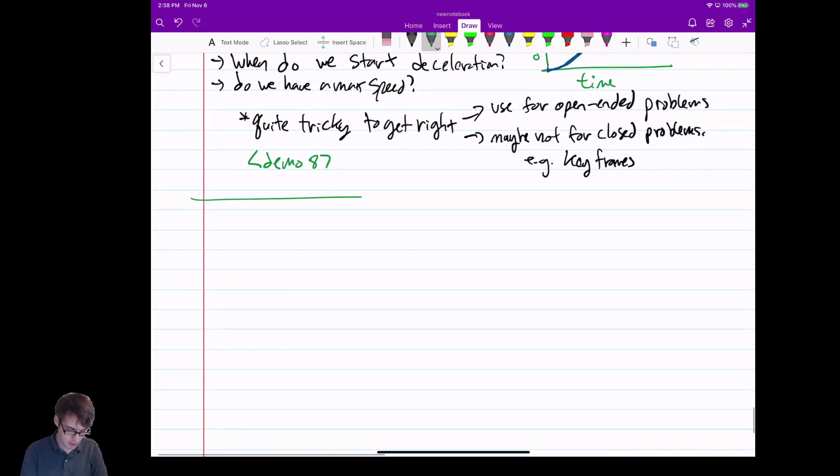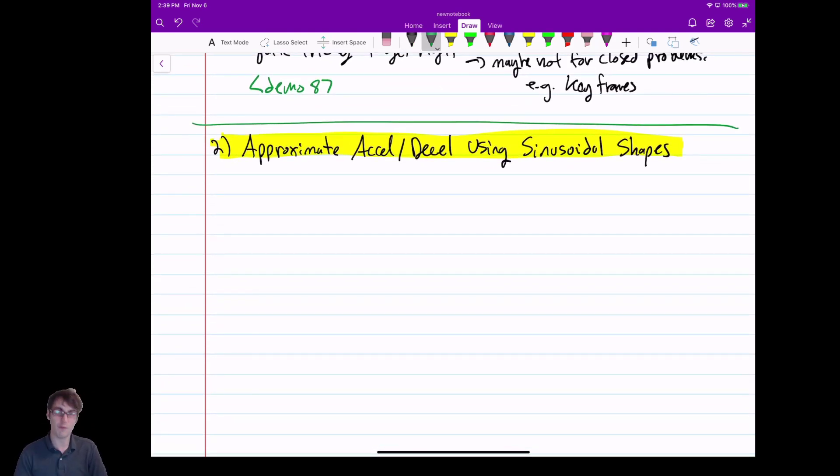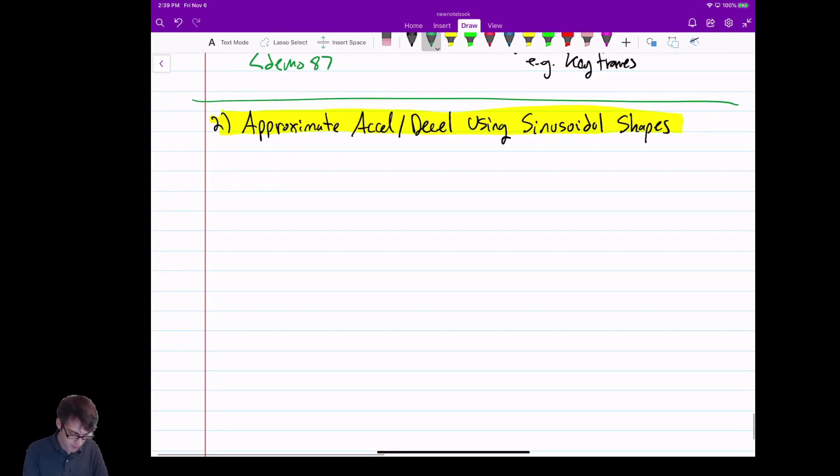All right, so let's learn about the sinusoidal approach of approximating acceleration and deceleration. That's the really popular approach you'll see in industry and in software that you use. We approximate acceleration and deceleration using sinusoidal shapes. What's really neat is we quickly see how useful sine and cosine are. These are really awesome functions and relationships we have in the real world. So let's just start by drawing it out.